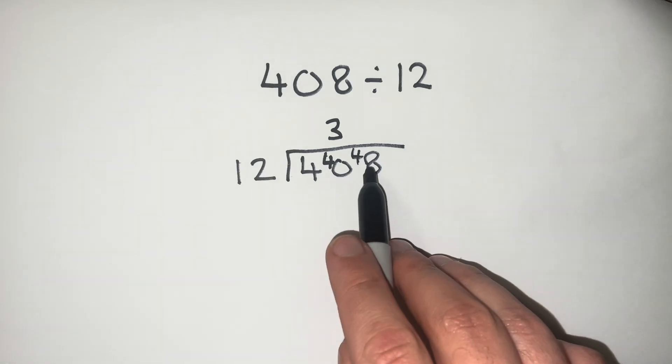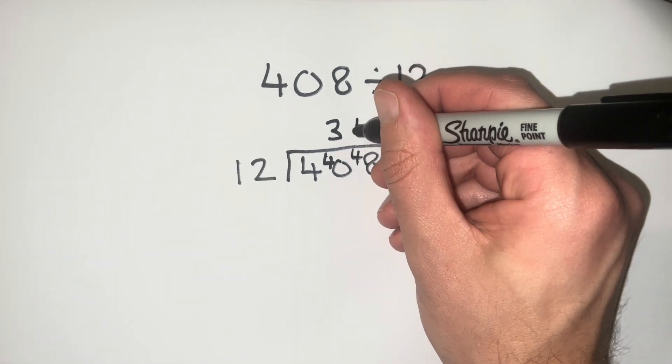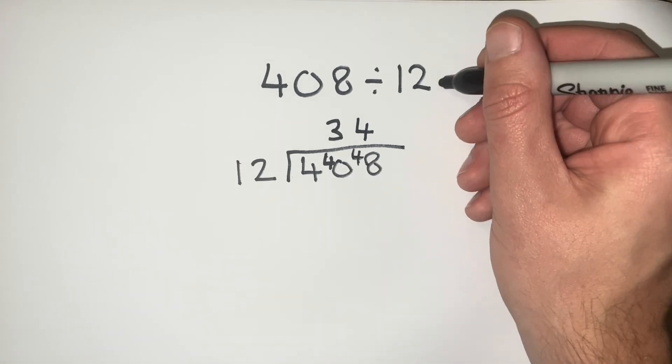We now ask how many 12s go into 48, and that's going to be 4. So we see that our answer to this question is 34.